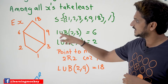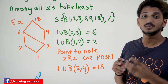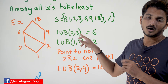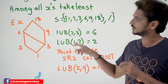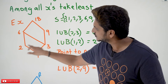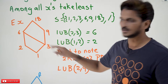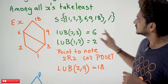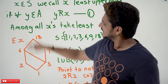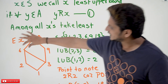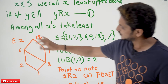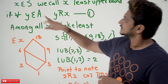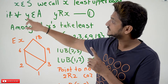Now let's find the Least Upper Bound of {2, 3} — we are taking a subset of elements: 2 and 3. For these elements you need to identify the Least Upper Bound. What is the Least Upper Bound for 2 and 3? It is 6. Why do we call 6 the Least Upper Bound? You take any element in this set — you can take 6, you can take 18, you can take 2, 3, 1, 9, any element.